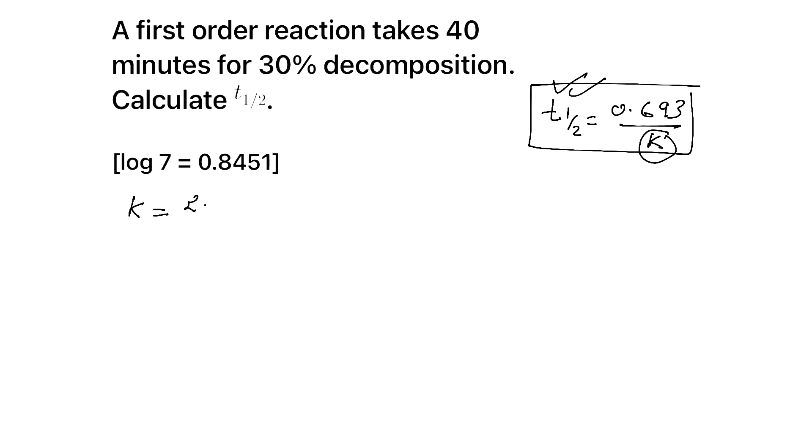What is the equation for K for first order reaction? It is 2.303 by T log initial concentration by present concentration, R0 by R.